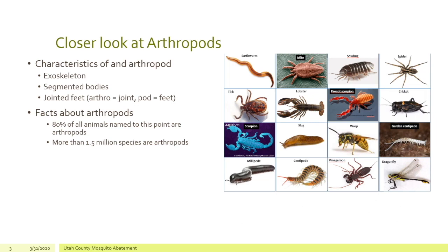We want to take a closer look at some of these invertebrates, and specifically at what we call arthropods. Characteristics of arthropods are they have an exoskeleton, which is a skeleton outside of the body. They also have segmented bodies — some have two segments, some have three segments, some have many more. They also have what are referred to as jointed feet. The word itself, arthropod, means literally 'joint foot.' Arthro is the word for joint, and pod is the word for feet.